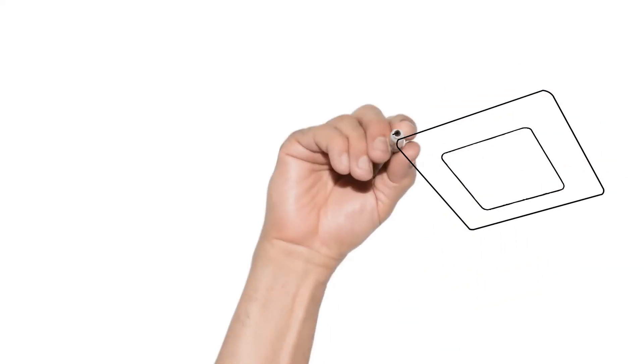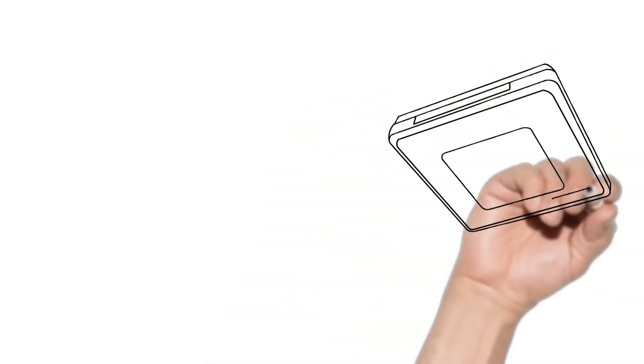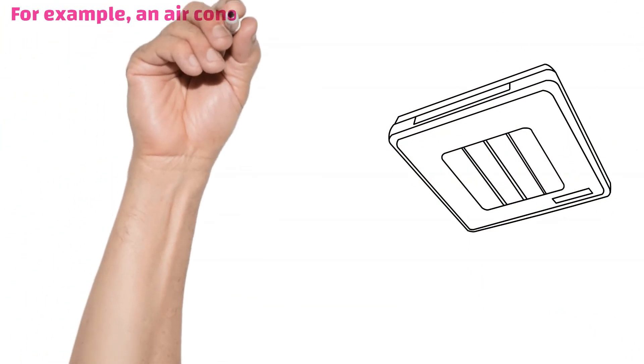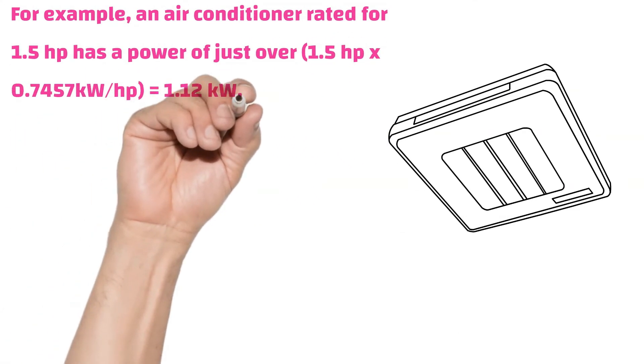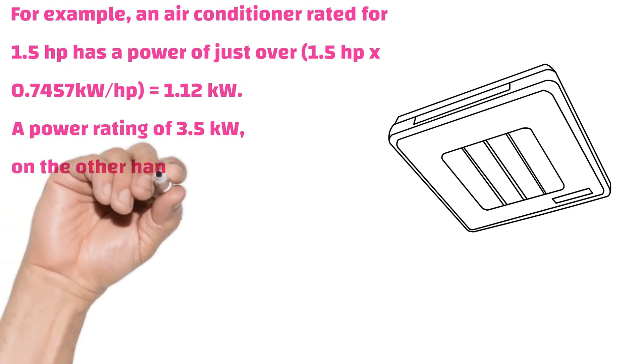For example, an air conditioner rated for 1.5 horsepower has a power of just over 1.5 horsepower into 0.746 kilowatts which is equals to 1.12 kilowatts.